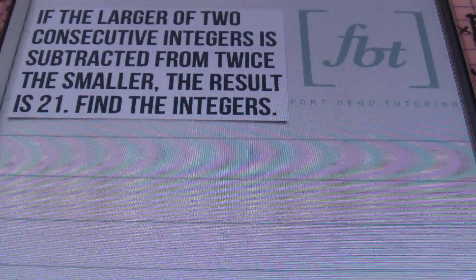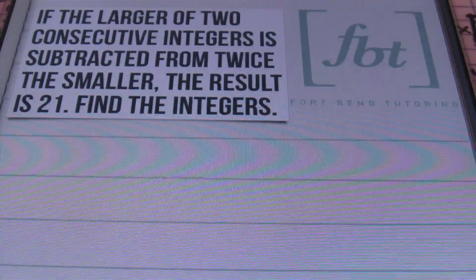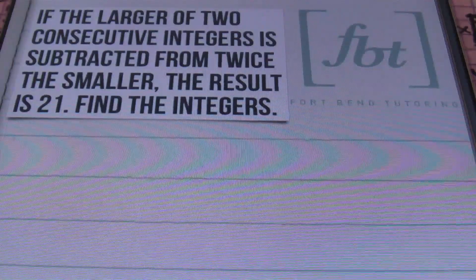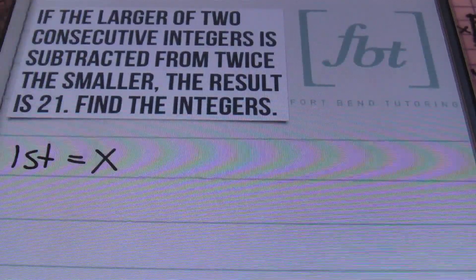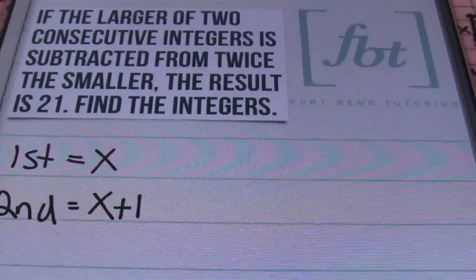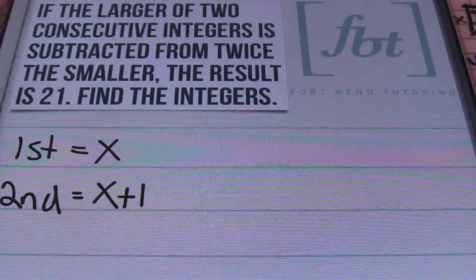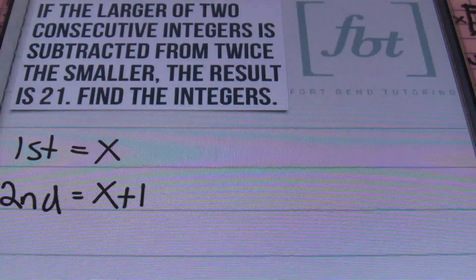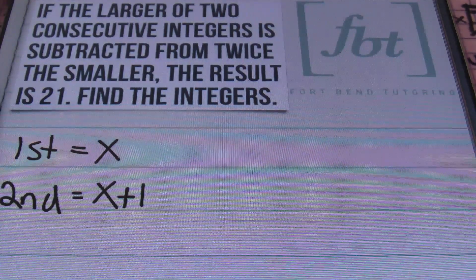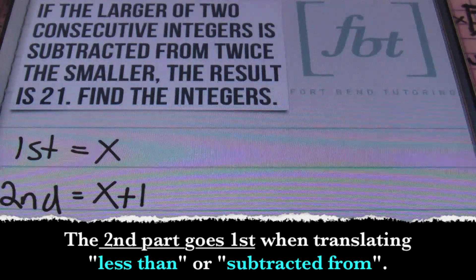In problem number two, it says: if the larger of two consecutive integers is subtracted from twice the smaller, the result is 21. Find the integers. I'm dealing with two consecutive integers. So the first thing I want to do is define my values: first value is x, and my second consecutive integer will be x plus 1. Anytime you have the phrase 'subtracted from,' you always put the second part first. Phrases such as 'less than' and 'subtracted from' — the second part of that sentence will definitely go first.